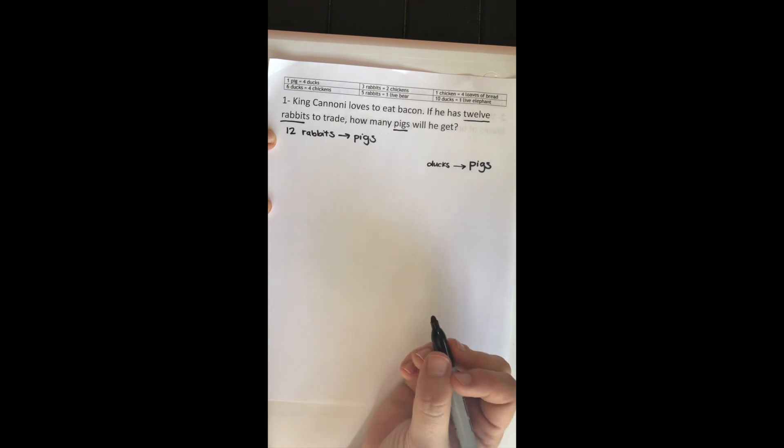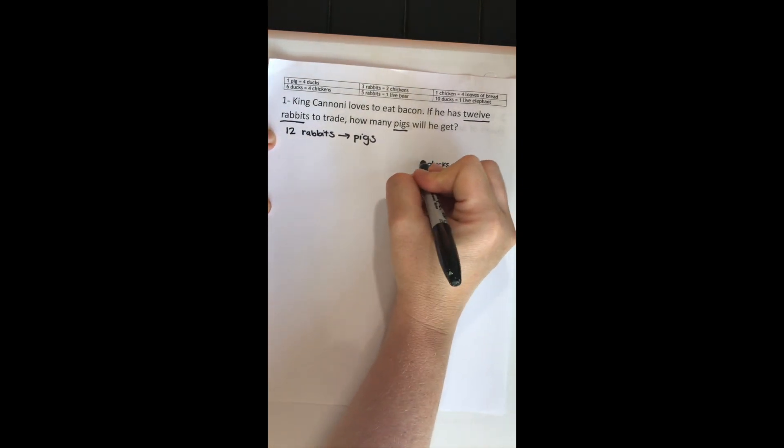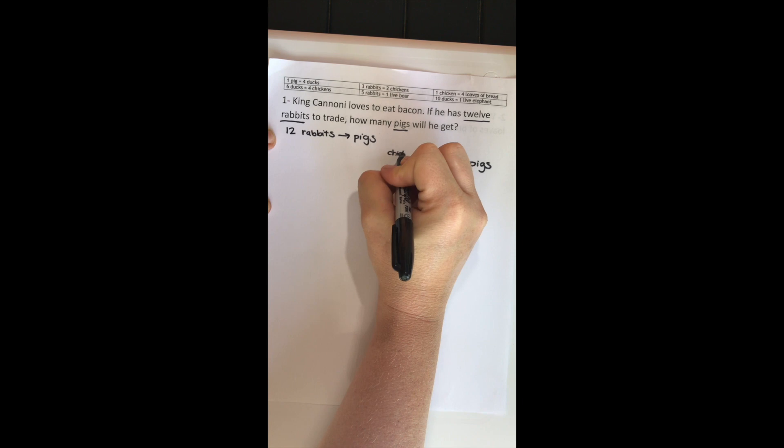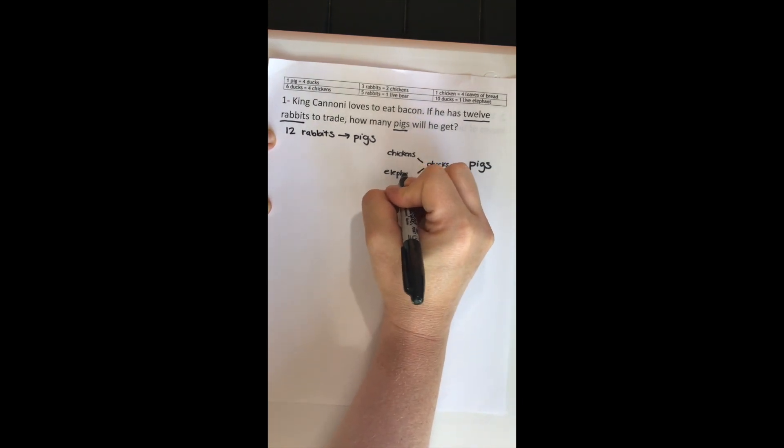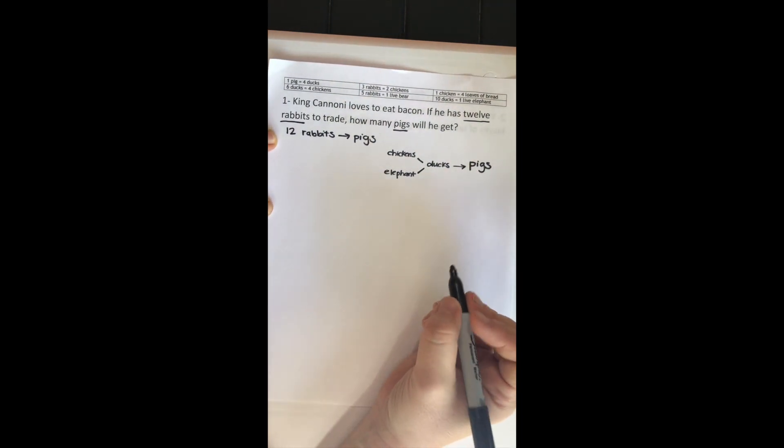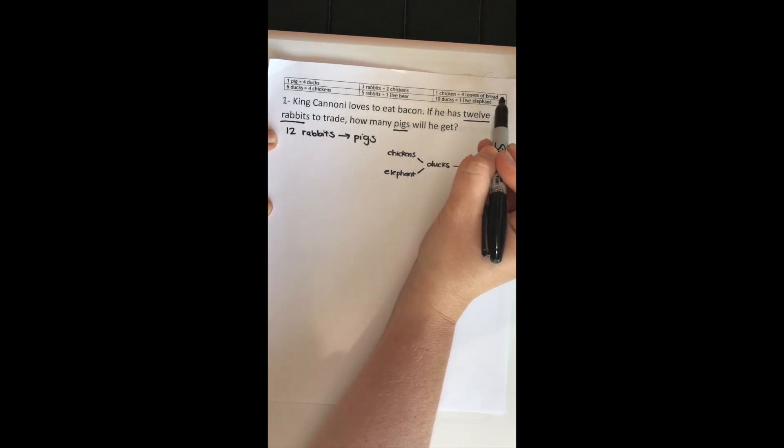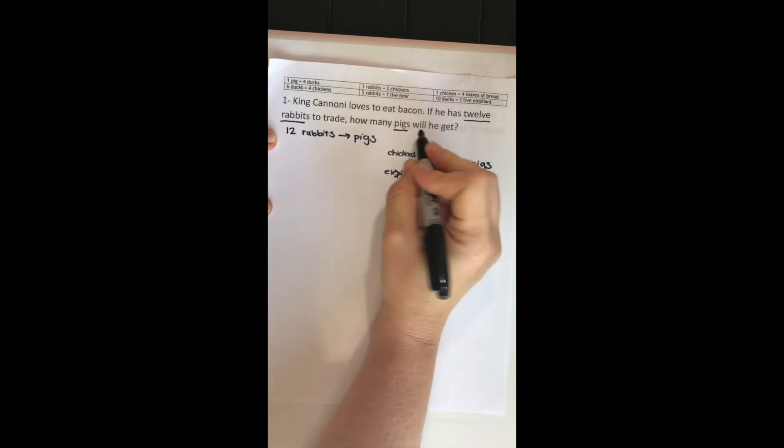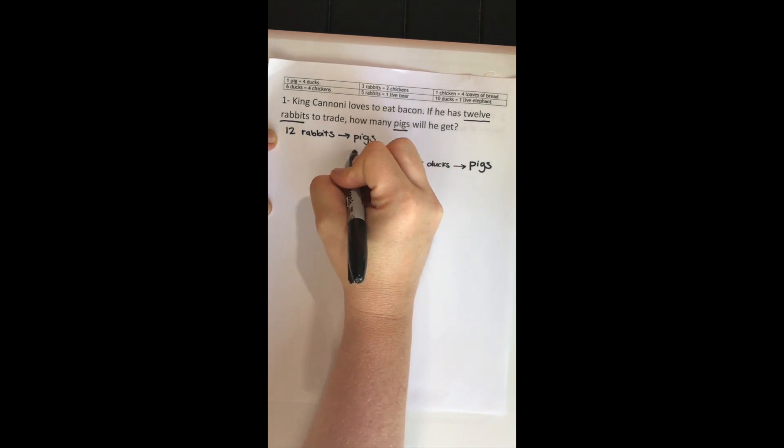Now let's look at ducks. What can get me to ducks? Chickens can get me to ducks, or an elephant. So I'm going to split this off here. We said chickens or an elephant can get me to ducks. Now I'll notice that the elephant only gets me to ducks. So can I get to rabbits from elephant? I can't. But if I look at chickens, can I get to rabbits from chickens? I can.